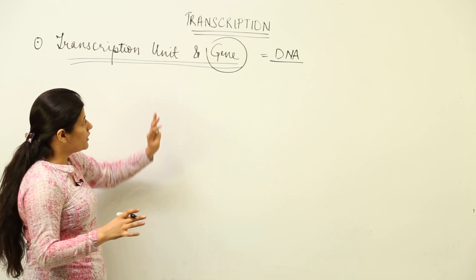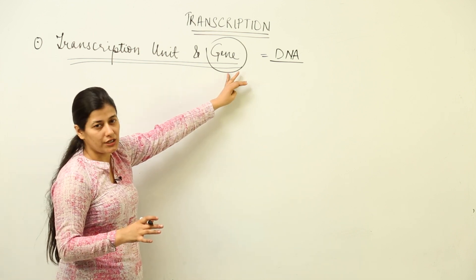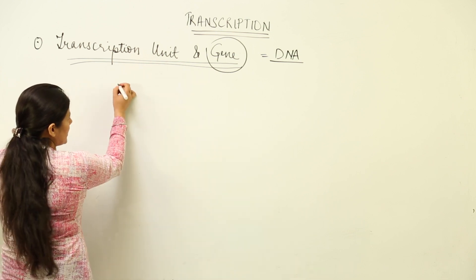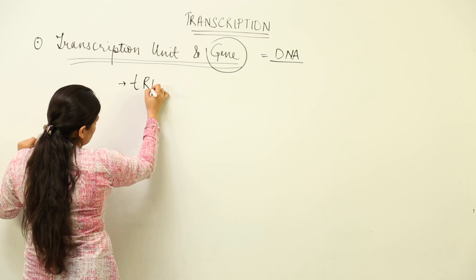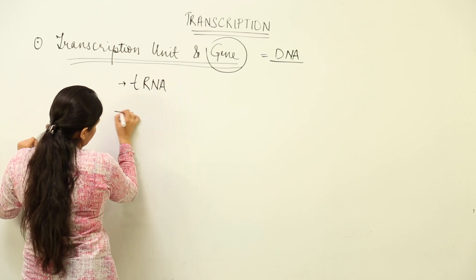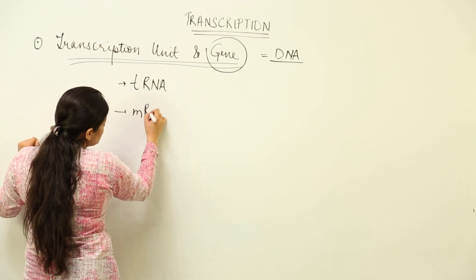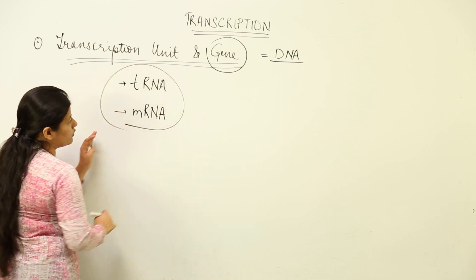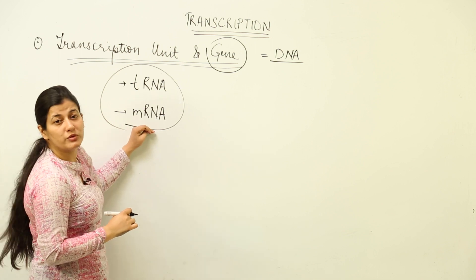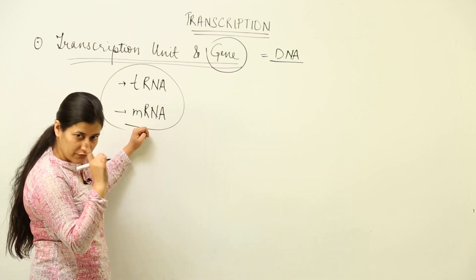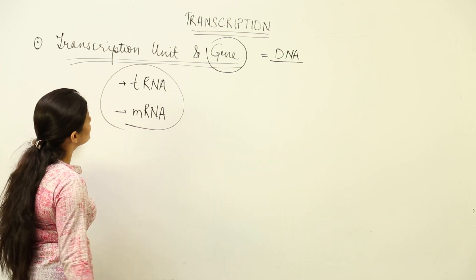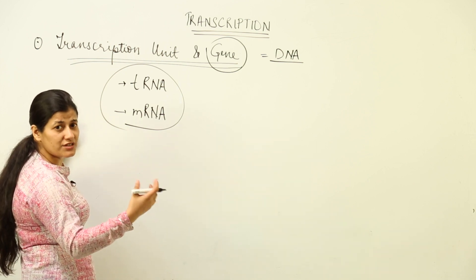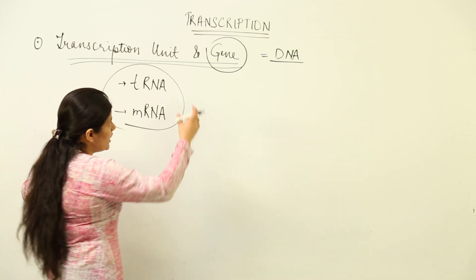First of all, this gene is a part of a transcription unit. Transcription gives rise to RNA, which could be tRNA — that is also formed out of transcription — or it could be mRNA. So we cannot say which is a gene: whether the one which gives rise to transfer RNA, or the one which gives rise to messenger RNA. That is the first complexity.